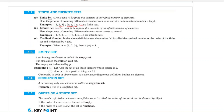An infinite set has uncountable elements, like the set of all natural numbers or the set of all even natural numbers — those are infinite. Next, the cardinal number: it tells how many elements are present in a set. For example, if set A = {1, 2, 3}, the cardinal number is 3, written as |A| = 3.